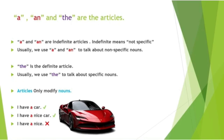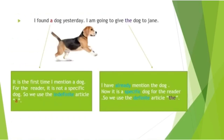Articles only modify nouns; they do not modify other words like adjectives or adverbs. For example, 'I have a car' — here 'car' is a noun and 'a' is the article modifying it. 'I have a nice car' — we added an adjective 'nice' but the article is still modifying the noun. However, 'I have a nice' is wrong because there is only an adjective, not a noun. An article does not modify an adjective.